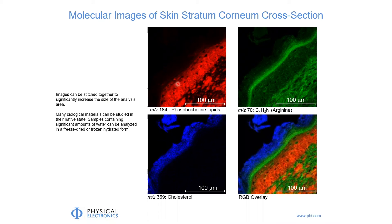We can actually get images on areas with lateral dimensions in the millimeter range. Conversely, we can zoom in and look at areas that are much, much smaller. So the size range available to us for imaging generally ranges from millimeters down to microns.